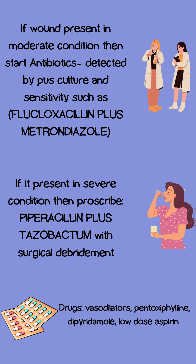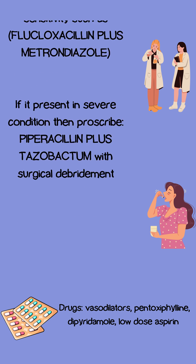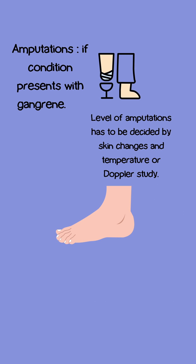For severe conditions, prescribe piperacillin plus tazobactam with surgical debridement. Also give vasodilators such as pentoxifylline, dipyridamole, and low-dose aspirin. Perform amputation if condition presents with gangrene; the level of amputation is decided by skin changes, temperature, or Doppler study.